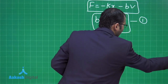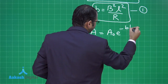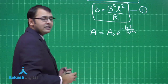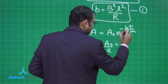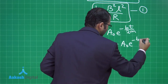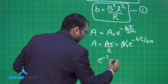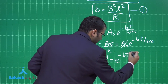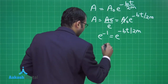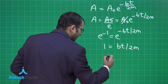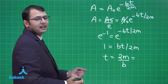This is equation one. For a damped oscillation, amplitude is A0 times e to the power of minus bt over 2m. In the question, amplitude is reduced to A0/e in time t. So A0 times e^(−bt/2m) equals A0/e, which gives 1 equals bt/2m, and therefore t equals 2m/b.